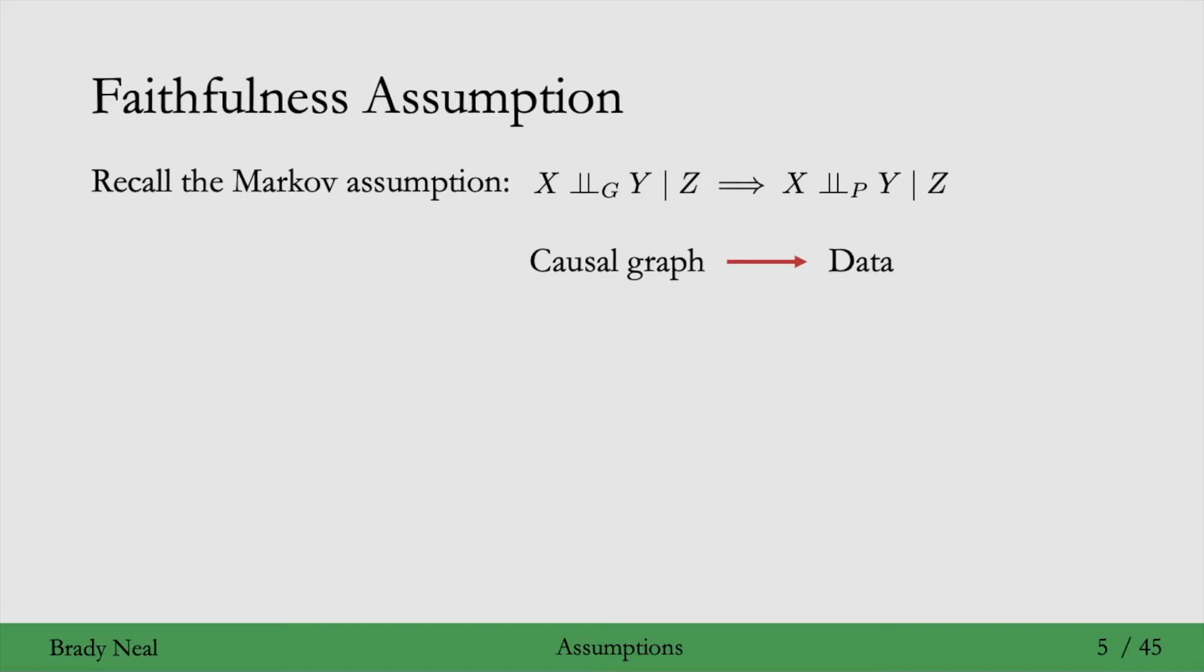But to do causal discovery, we really want to be able to go the other direction. We want to be able to start with data and then infer the causal graph from there. So we need an assumption that has an implication in the other direction. And this is the faithfulness assumption. It's just the converse of the Markov assumption.